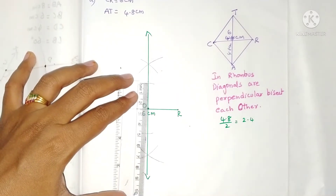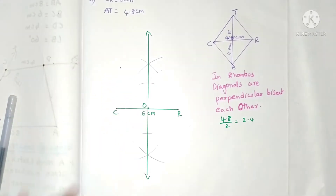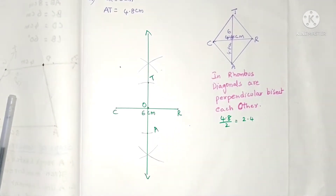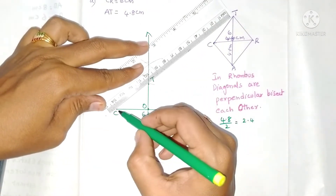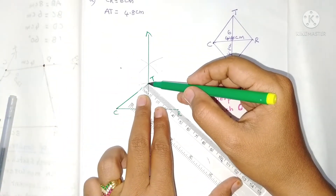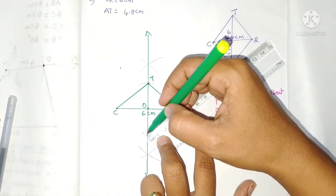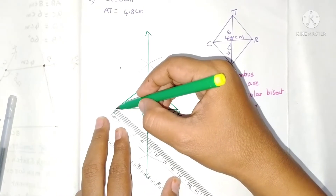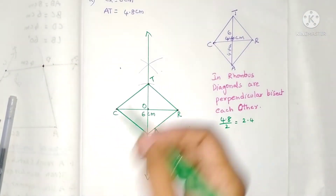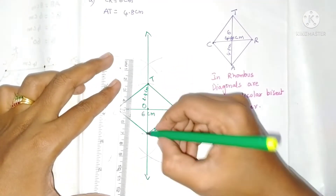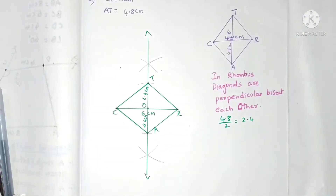With O as center, draw an arc on this side and on the other side. If you measure it, it is exactly 4.8 centimeters. The intersecting point on one side is T and the other is A — this is the second diagonal AT. Now join CT, RT, CA, and AR. Each side is 4 centimeters since all sides of a rhombus are equal. By joining these we get the rhombus CART.